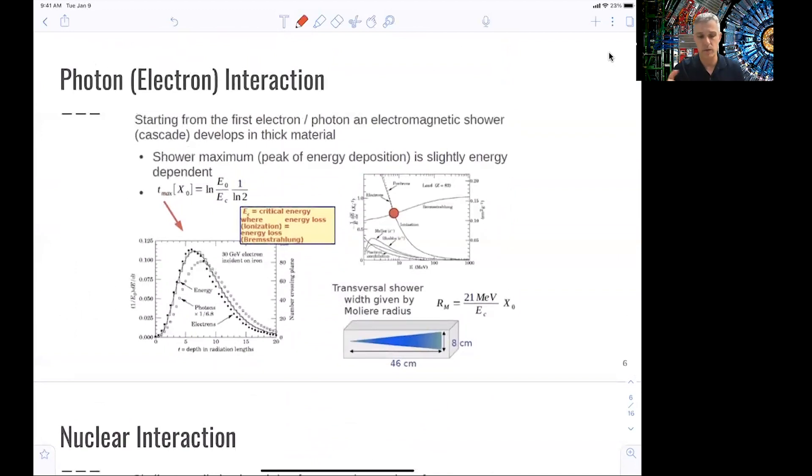So when we think about how a photon or an electron leaves a footprint in a calorimeter, you start from this first electron and photon. And then this particle evolves in an electromagnetic shower. So there's this cascade effect as the particle tries to move through this material. The shower maximum is given here, slightly depends on the energy. You see this logarithmic dependency. I introduce here the critical energy. This is where the energy loss through ionization is equal to the bremsstrahlung.